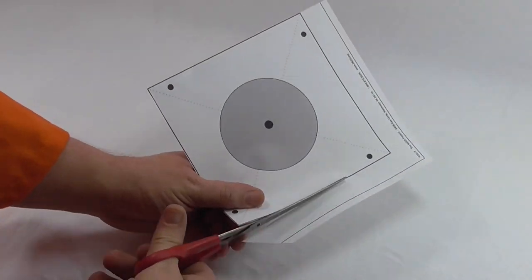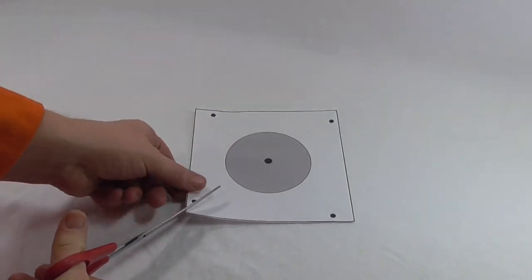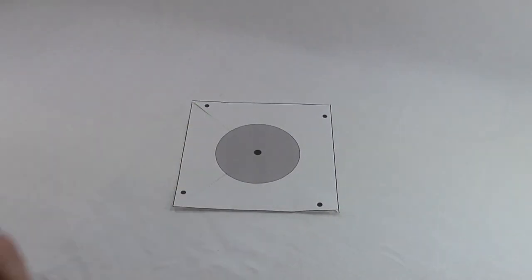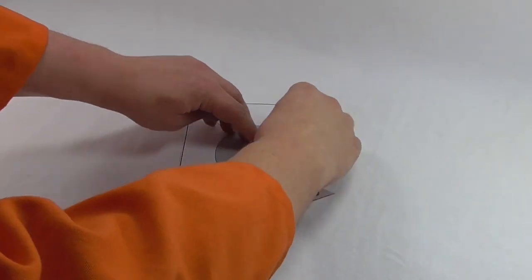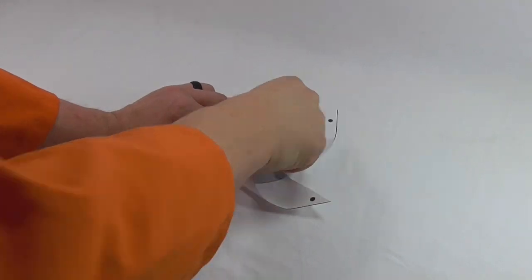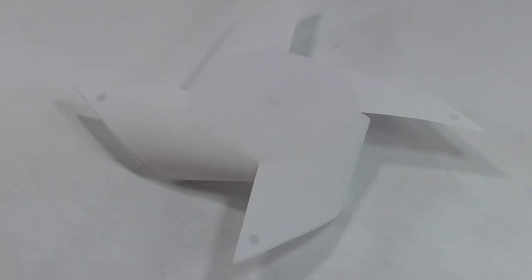Print out the wind blade template and cut out the whole square. Cut from each corner of the square towards the outside of the center circle. Fold every other flap towards the center and tape it in place. You'll end up with a paper pinwheel.